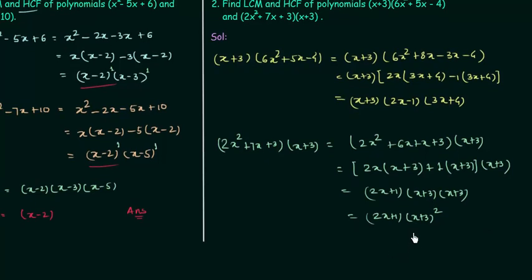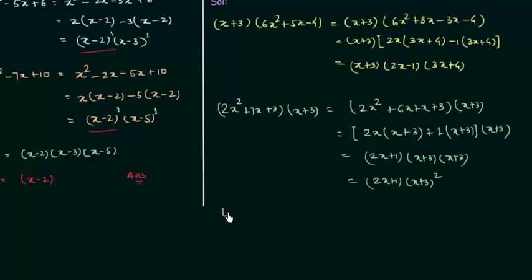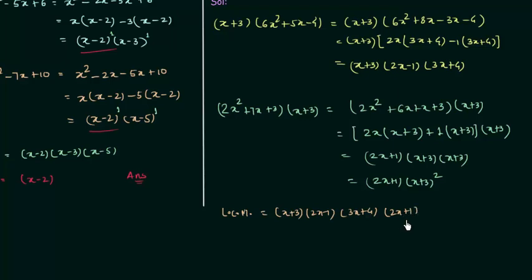We have calculated the factors of both polynomials and now we find the LCM, which equals the product of factors with the greatest index. The factors from the first polynomial are (x + 3), (2x - 1), and (3x + 4). From the second polynomial we have (2x + 1) and (x + 3)². Since (x + 3) appears with index 1 in the first and index 2 in the second, we take (x + 3)² for the LCM. So LCM = (x + 3)²(2x - 1)(3x + 4)(2x + 1).